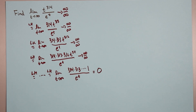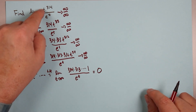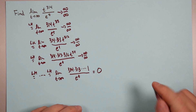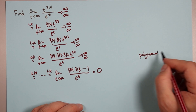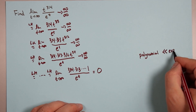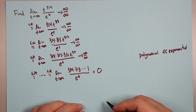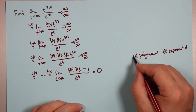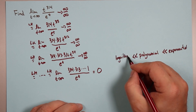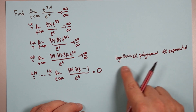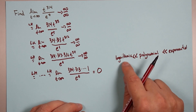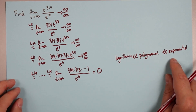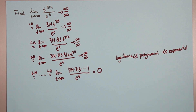This teaches us about order of growth. Exponential always beats polynomial, and polynomial always beats logarithmic. Even though you have a huge polynomial like t to the 314th power, exponential will eventually beat it. Similarly, polynomial is much bigger than logarithmic. In the race: exponential always beats polynomial, polynomial always beats logarithmic — which, by the way, is why you invest when you're young to get that exponential growth.